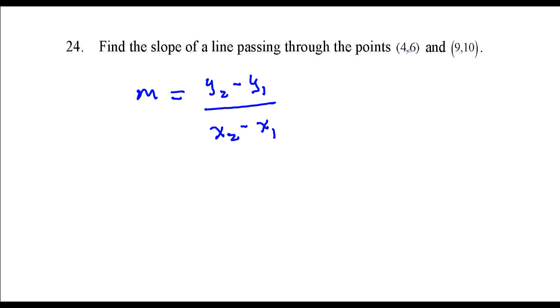And it's convenient if you just label these two ordered pairs. I'm going to label this one as x1 comma y1, and this ordered pair I'll label x2 comma y2, and I'm just going to substitute the coordinates of these ordered pairs into the slope formula and then simplify.